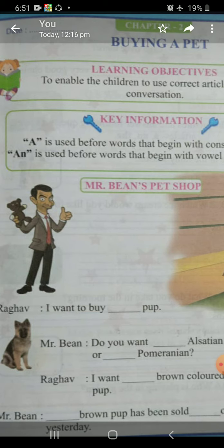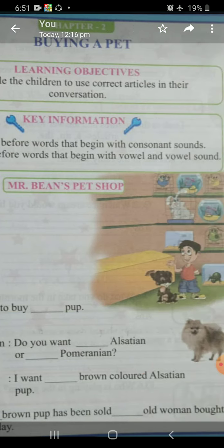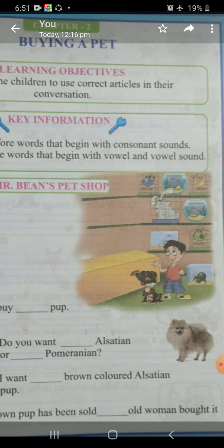Means, An wahaan use hota hai — us shabd ke pehle jis ki sound ya toh vowel se start hoti hai, ya phir vowel sound se. Okay, thik hai. First of all, tell me what is consonant and what is vowel? Okay, I will tell you.